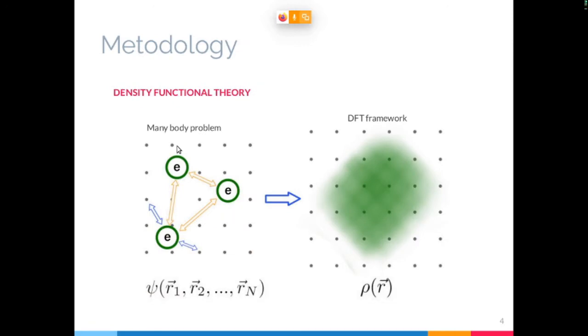So as I said we'll use ab initio techniques, in specific the density functional theory, which transposes the problem of finding the wave function of the crystal using Schrödinger's equation to the much simpler problem of finding the electronic density of the periodic crystal. And we'll use spin-orbit coupling, and use the Vienna Ab Initio Simulation Package for implementing the code.